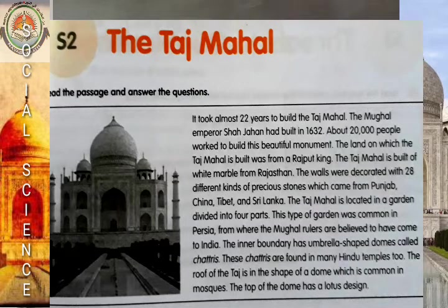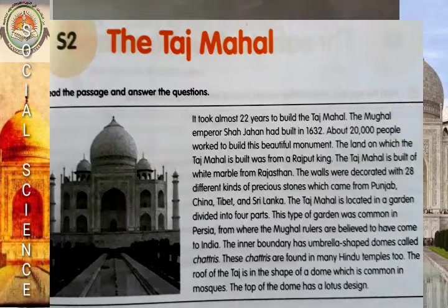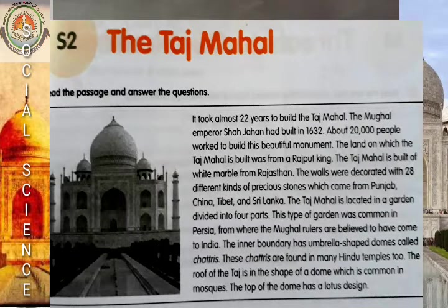The Taj Mahal is built of white marble from Rajasthan. The walls were decorated with 28 different kinds of precious stones which came from Punjab, China, Tibet, and Sri Lanka. The Taj Mahal is located in a garden divided into four parts. This type of garden was common in Persia, from where the Mughal rulers are believed to have come to India. The inner boundary has umbrella-shaped domes called Chhatris, which are found in many Hindu temples too.